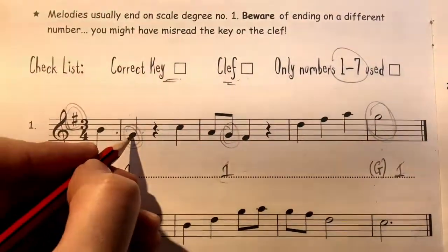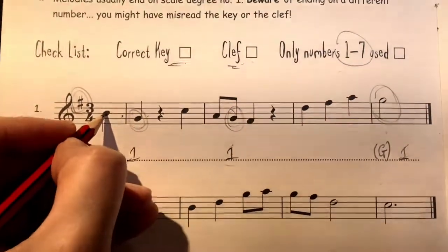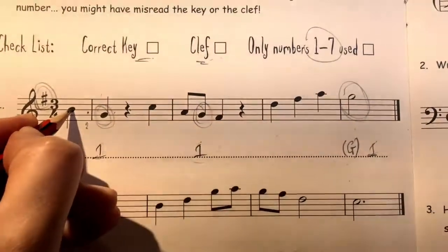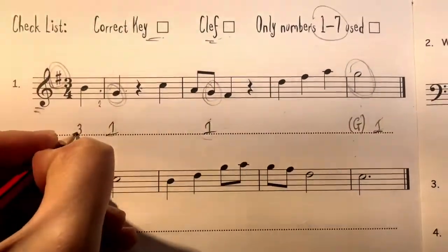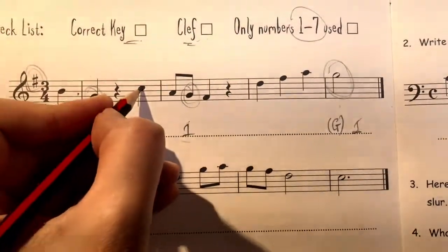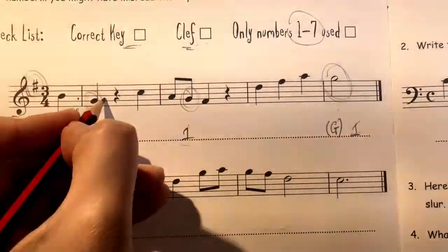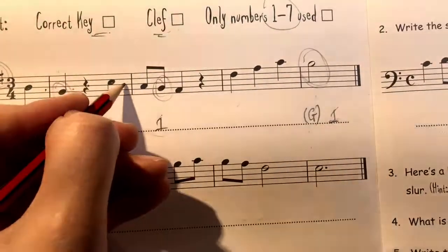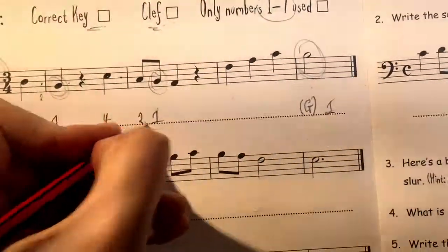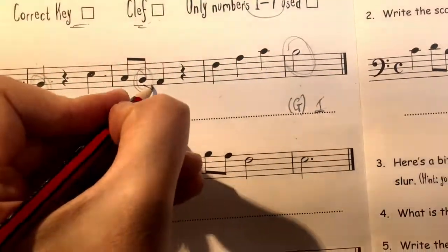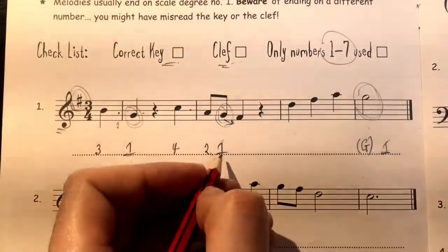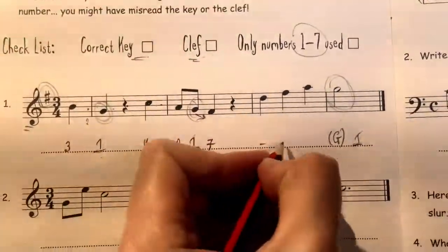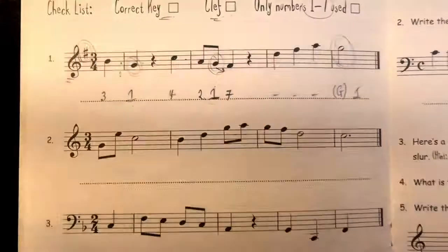With our number ones marked in, we can work out all the other numbers. From G we go up to A which will be two; up one more to B will be number three. From the next number one, G goes up to A — number two, up to B — number three, up to C — number four. From four we work backwards: back down to B is number three, and A is number two. When the melody goes below number one, remember to work backwards — before number one always comes the seventh scale degree.